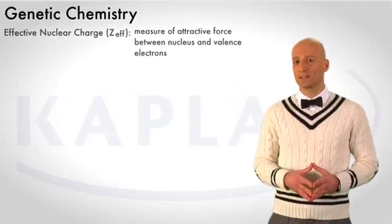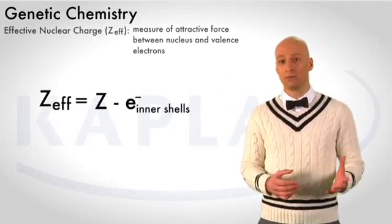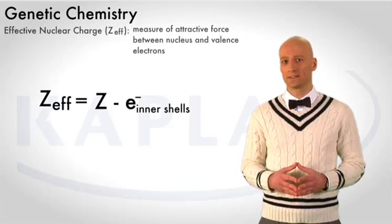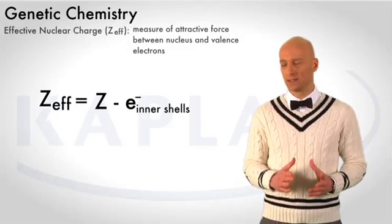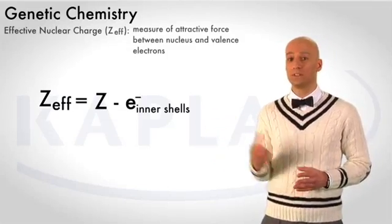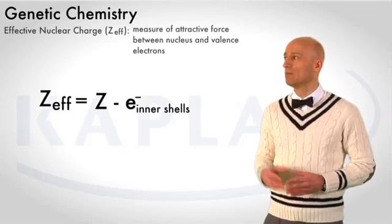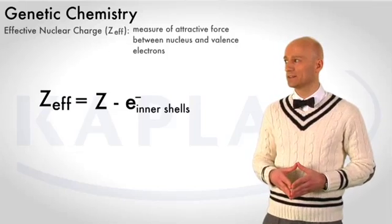Mathematically, we can approximate the Z-effective as the difference between the number of protons in the nucleus and the number of electrons in the inner shells. And you see the equation here. Z-effective is equal to Z, the atomic number, minus e of the inner shells, the number of electrons in the inner shells.